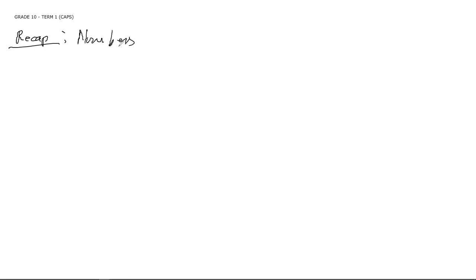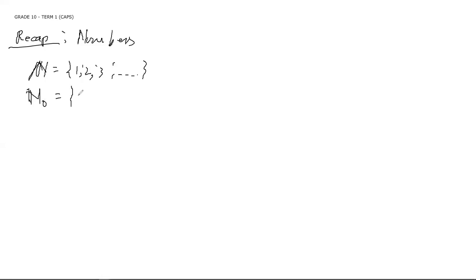We learned about numbers in Grade 9, and I believe we are very familiar with the set of natural numbers — counting numbers from one, two, three up to infinity. We also have whole numbers, which are basically natural numbers but with the addition of zero.